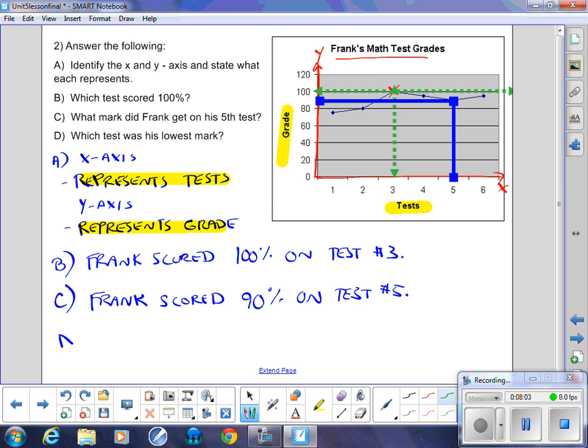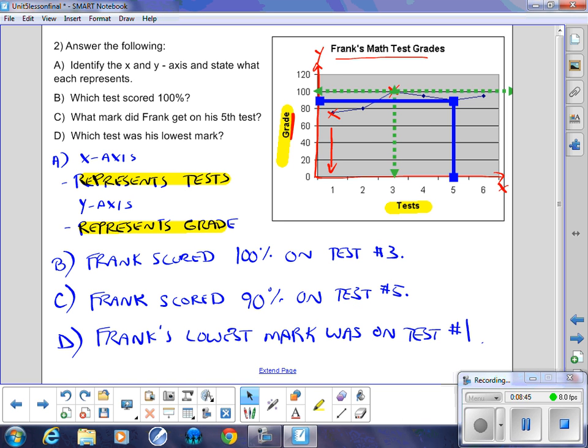And the last question, which test was his lowest mark? So what you're looking for is the lowest coordinate that was plotted, because we're on the y-axis. We're looking for the lowest grade. If we're looking for the lowest grade, it's the lowest coordinate on the y-axis. So as I scan across, I see that this is my lowest coordinate on the y-axis. It's the lowest grade. And it corresponds with test number one. So Frank's lowest mark was on test number one. And that answers all our questions in that particular graph.